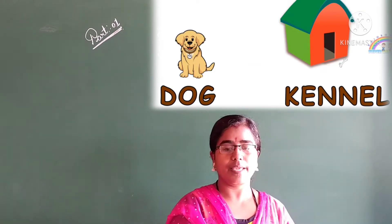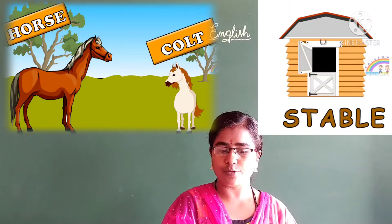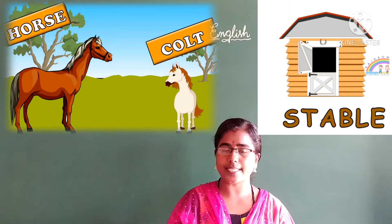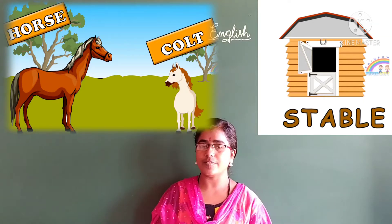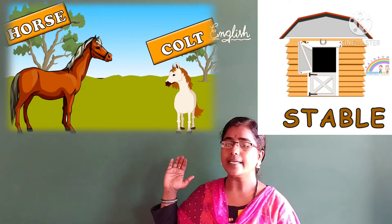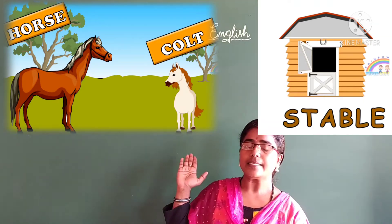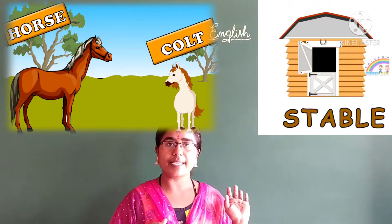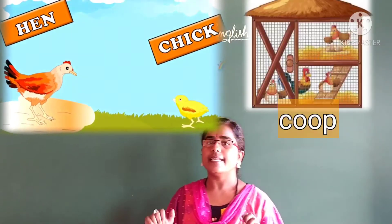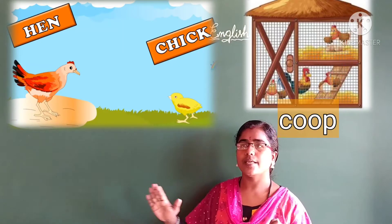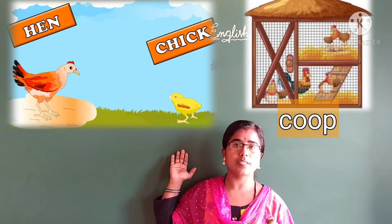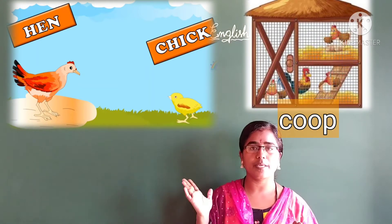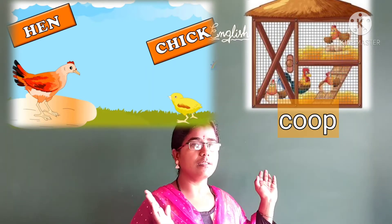Like that, there is a horse. The baby of the horse we call a colt. The house of the horse we say stable. Then the hen - the baby of the hen we say chick, and the house of the hen we say coop.